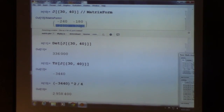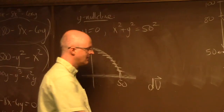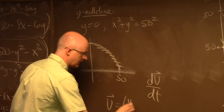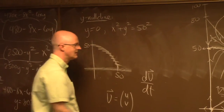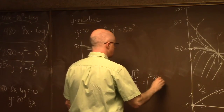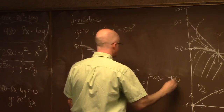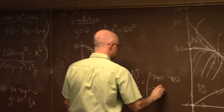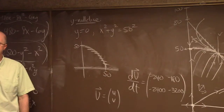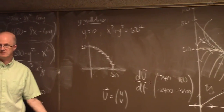That's effectively what we're doing, and it's why on the test I emphasized thinking about the linearized system in terms of a new variable capital U, whose components are little u and little v. The linearization at (30, 40) is the matrix with entries −240, −180, −2400, −3200.